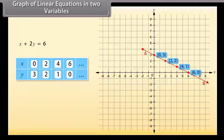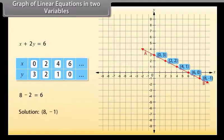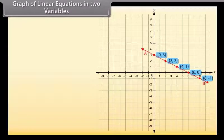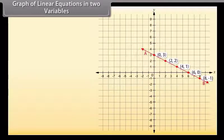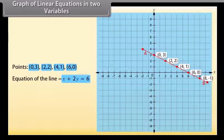Now, pick another point on this line — let us pick (8, minus 1). Is this a solution of the equation? Yes, because by substituting X as 8 and Y as minus 1, we get the answer 6. So, (8, minus 1) is a solution. What we have observed is that every point whose coordinates satisfy the given equation lies on Line AB. Every point on Line AB gives a solution of the equation. So, you can conclude that every point on the line satisfies the equation of the line and every solution of the equation is a point on the line. This is called the graph of the linear equation. To obtain the graph of a linear equation in two variables, it is enough to plot two points corresponding to two solutions and join them by a line.